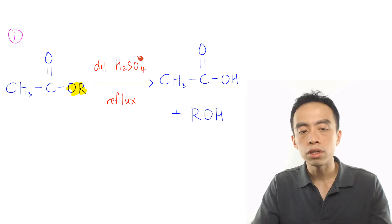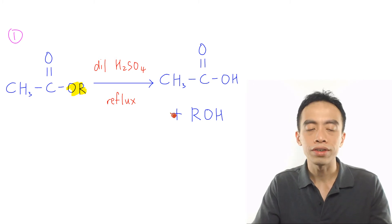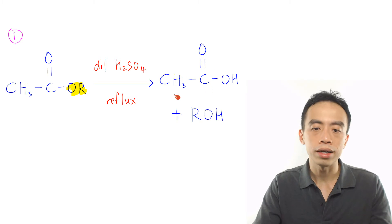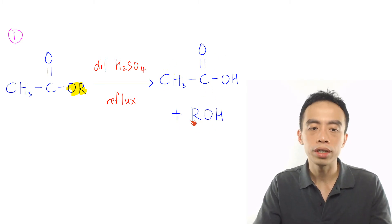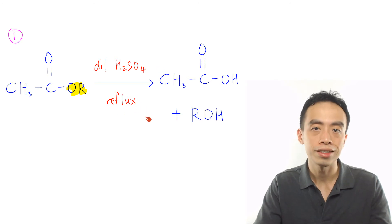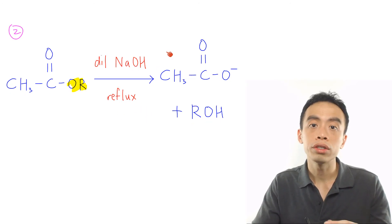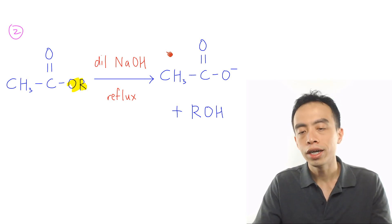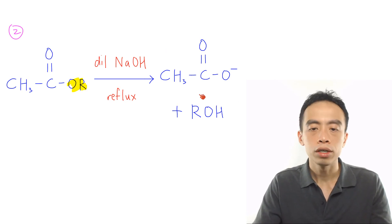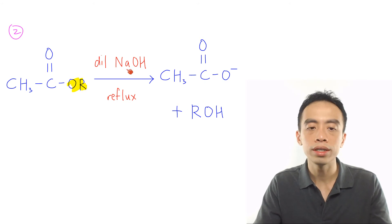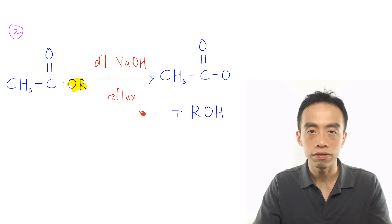Now finally let's talk about the three reactions of esters. The first reaction of ester is the acidic hydrolysis of ester to give us carboxylic acid and alcohol. This is done using dilute H2SO4 with heat or reflux. The second masnone reaction of esters would be the alkaline hydrolysis of ester to give us the salt of carboxylic acid and alcohol. This is done using dilute NaOH with heat or reflux.